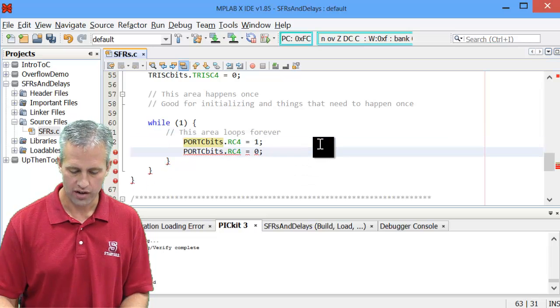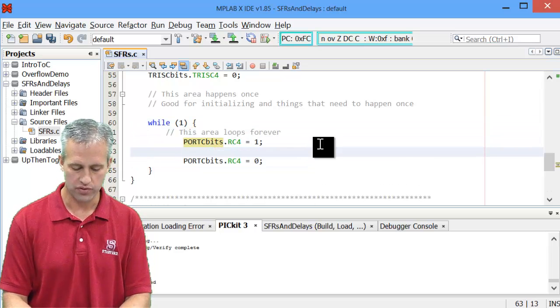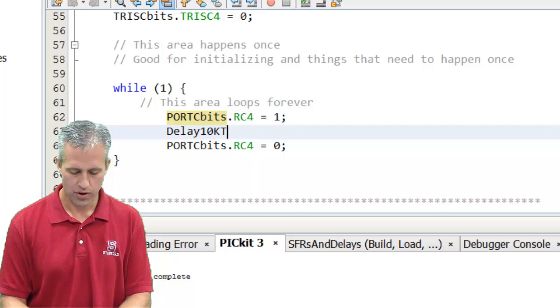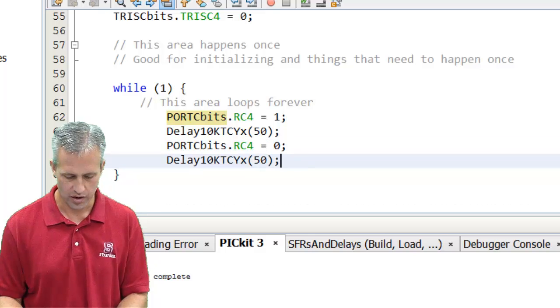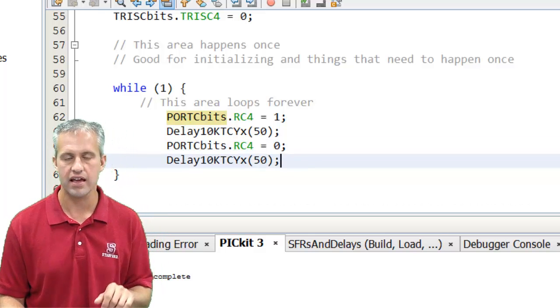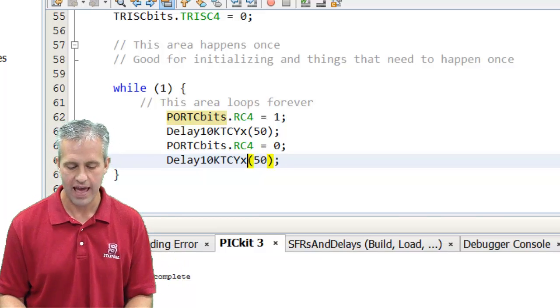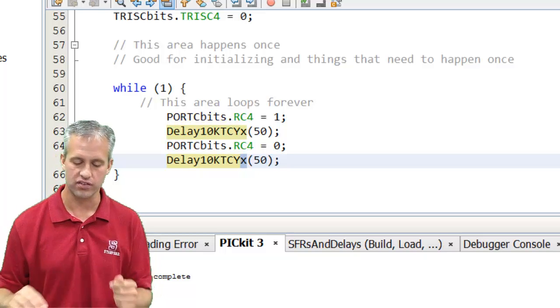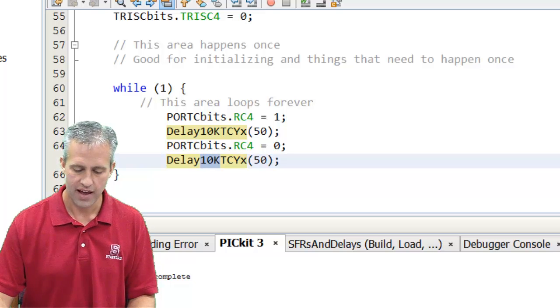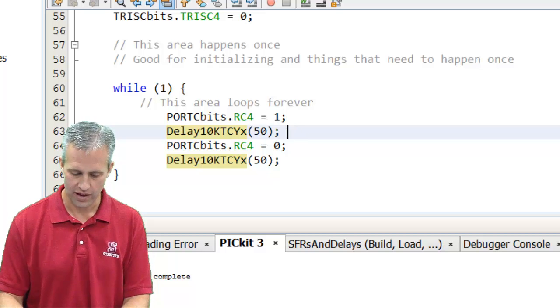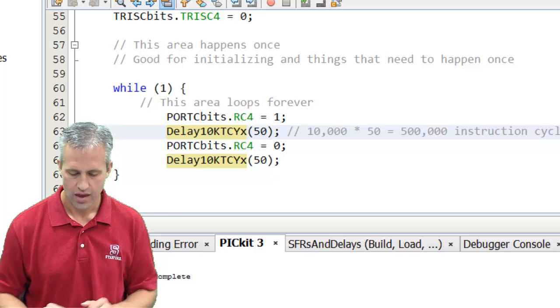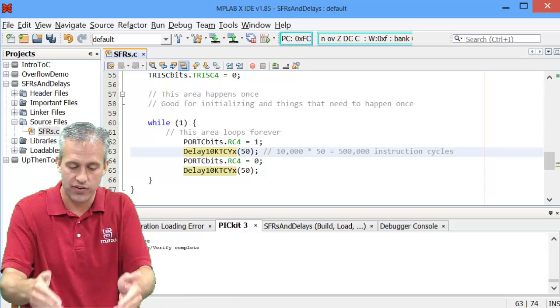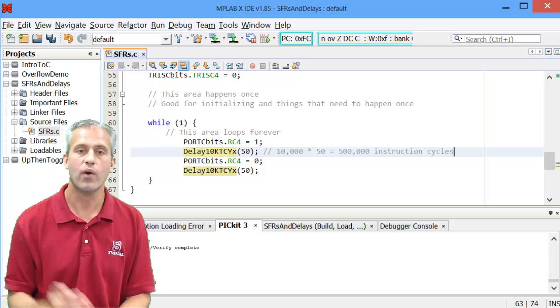I'm just going to delete what was there before. And instead of waiting for a button press, I'm just going to type a delay function. So the function that I chose to type, hopefully you can read what I type, but I type delay 10k, which is capital K, tcy, which is all capitals, and then x, which kind of represents the multiplication symbol in this case. So it's delay for 10,000 times 50. So in the end, we've got 10,000 times 50, which is of course 500,000 instruction cycles. And of course, you would not want to type 500,000 lines, but effectively right there, you just type 500,000 no ops, right? Way easier to do this way.